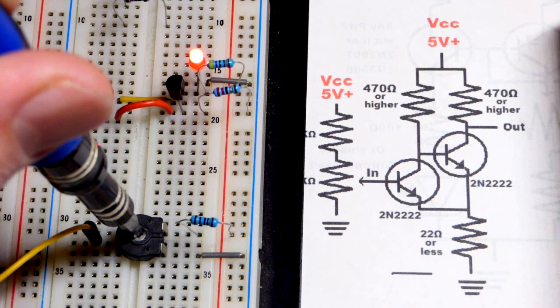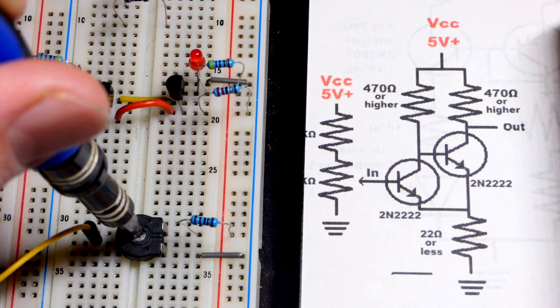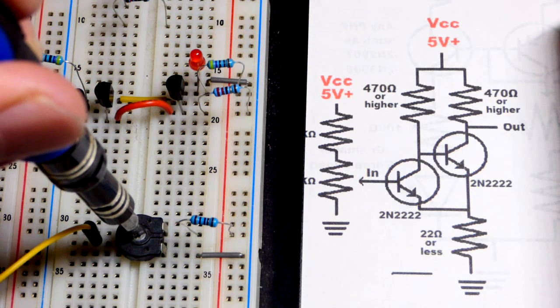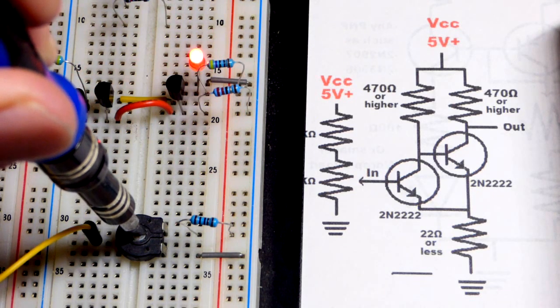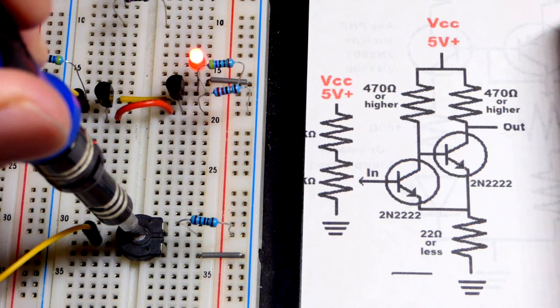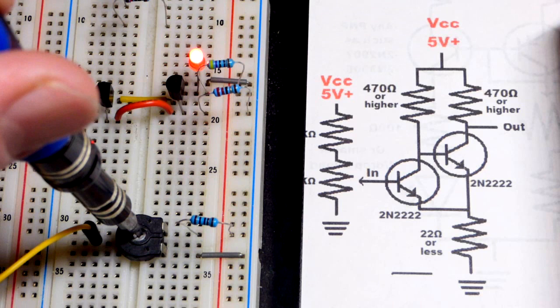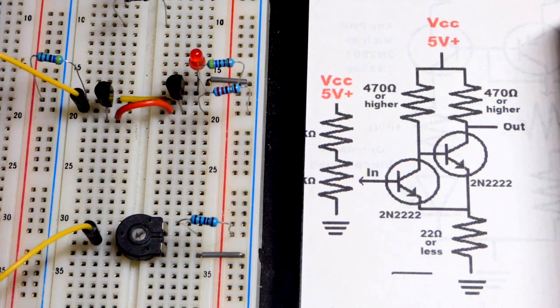As you can see, it's not in an exact spot where it turns on and off. If it's already off, I have to slide it farther up from where it turned off to turn it back on. And now that it is on, I have to slide it further down than the spot where it turned on to turn it off. So that's called hysteresis.